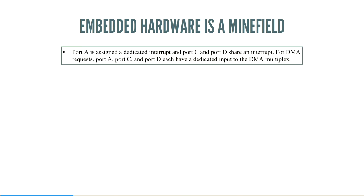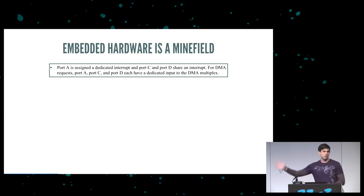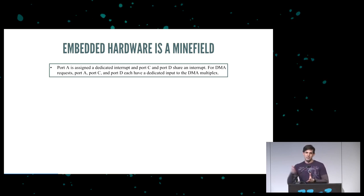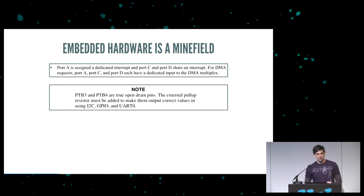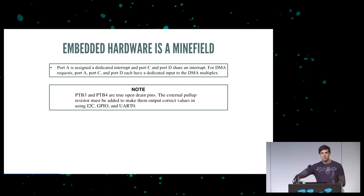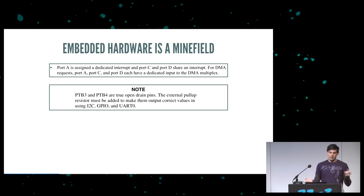For example, one reference manual line says 'Port A is assigned a dedicated interrupt, and port C and port D share an interrupt.' If you read between the lines, they don't actually mention port B. Port B exists but has no interrupt — this is the kind of problem you find out about two weeks after you get the board back from the fab. Another pitfall: PTB3 and PTB4 are true open drain pins, which means you need an external pull-up — basically they're input only. You can't use them for output.